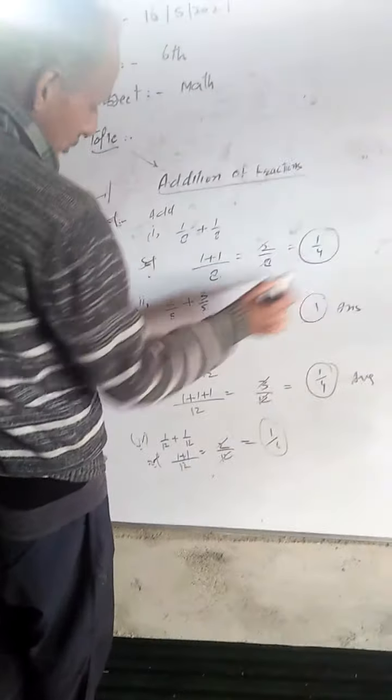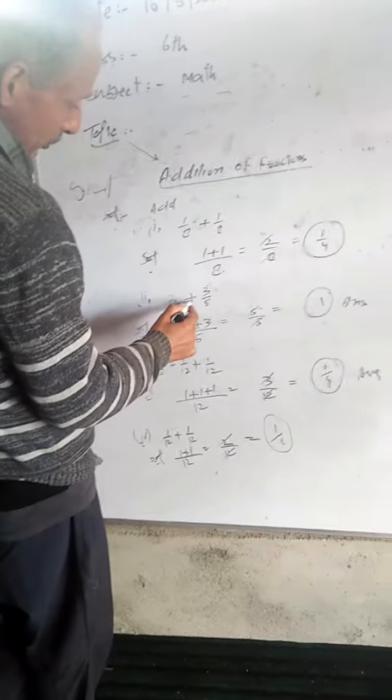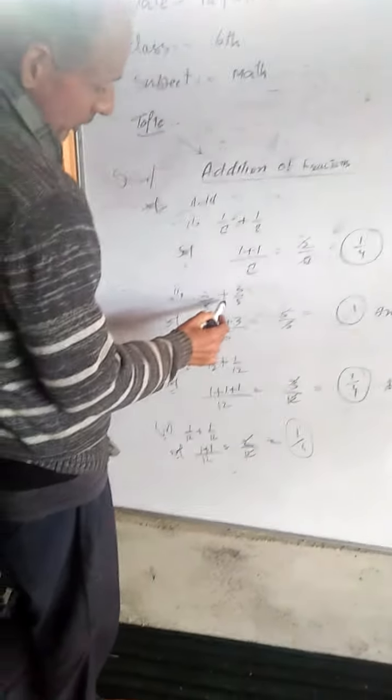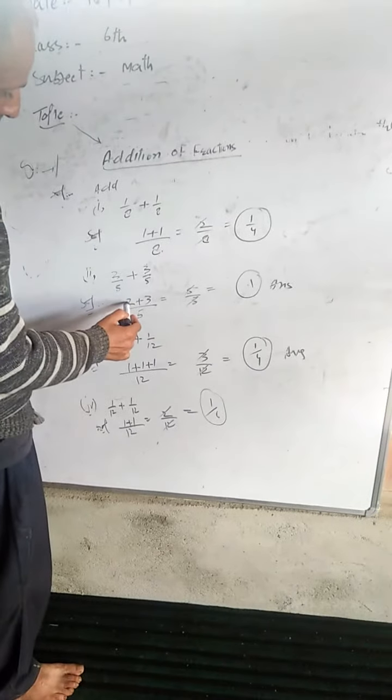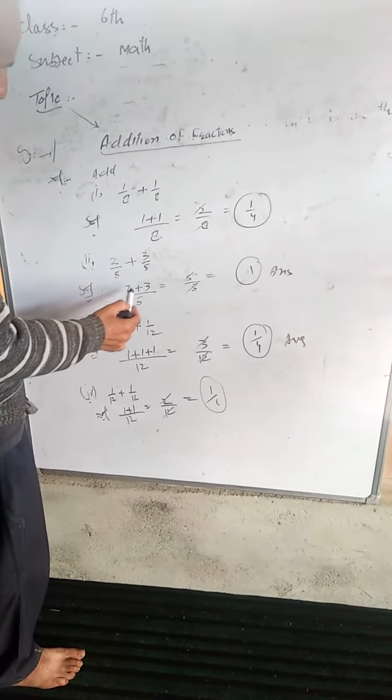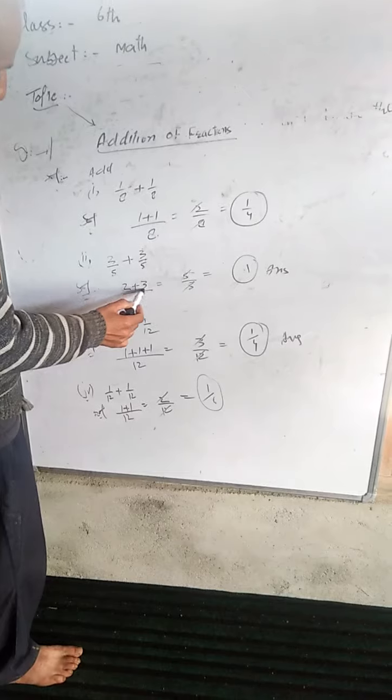Next, I'll put two by five plus three by five. The denominator is the same. Two by five plus three by five. Two plus three by five.